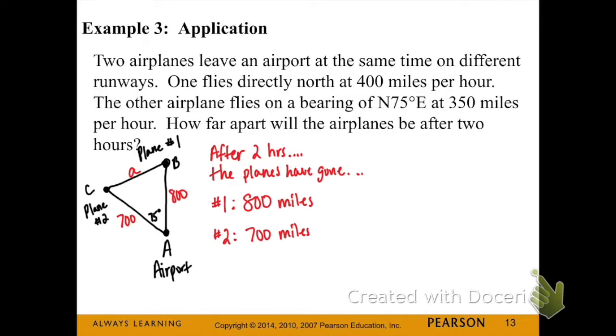Okay, so let's start with I have angle A as my airport and then angles B and C are planes 1 and 2.